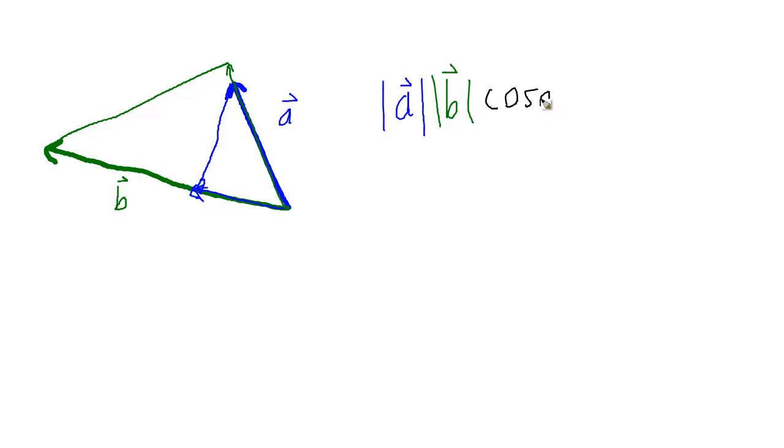And I know that the cosine of the angle is the projection part. This triangle here, whatever vector I want times the cosine will give me the projection part. So the vector I want to project onto I need to normalize and that's it.